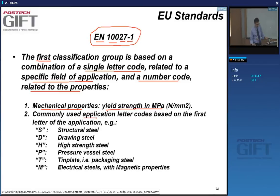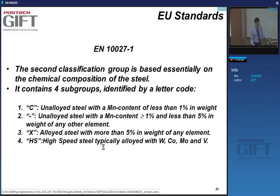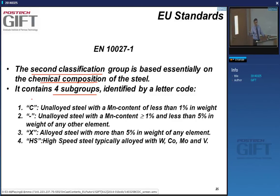Application codes include: S for structural steel, D for drawing steel, H for high strength steel, P for pressure vessel steel, T for tin plate or packaging steels, and M for electrical steels with magnetic properties. The second classification is based on chemical composition. All standards — JIS, AISI, and EN — share this approach of subgroups.